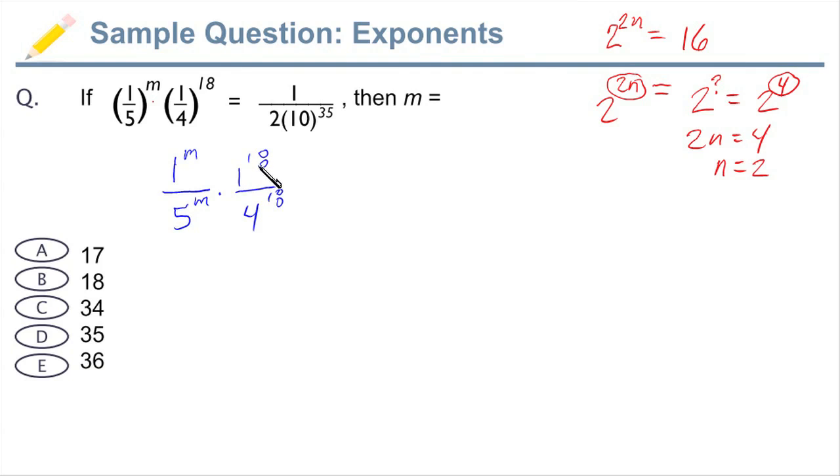Now it doesn't matter what m is, it doesn't matter what 18 is. 1 times itself a gazillion times is still just 1. So rewriting this again, this is the same thing as 1 over 5 to the m times 1 over 4 to the 18. And then of course, anytime you're multiplying fractions like that, 1 is just the numerator and then the denominator is 5 to the m and then 4 to the 18. Okay, so now we're somewhere.